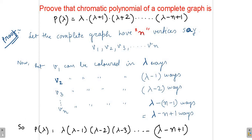So first of all, we will take a complete graph with n vertices. So we have n number of vertices and the vertices are v1, v2, v3 up to vn.